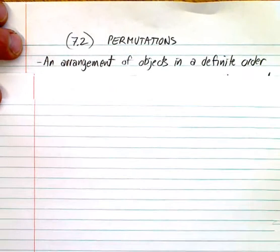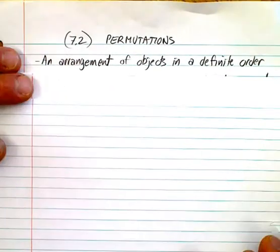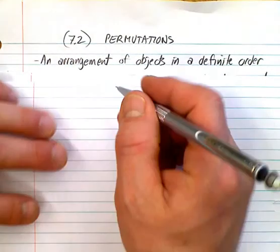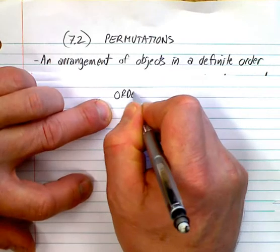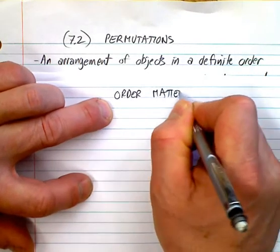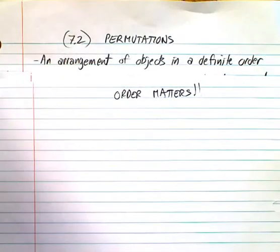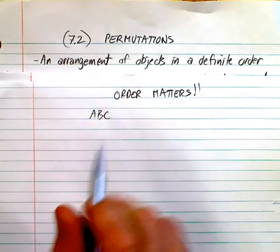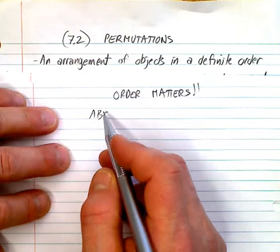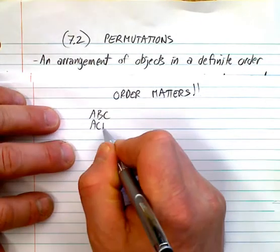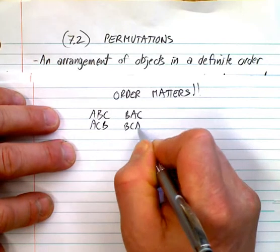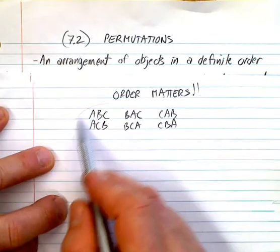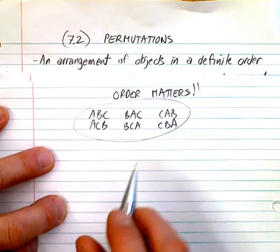Basically, a permutation is an arrangement of objects in a definite order. We often ask the question: does order matter? And right now, order matters for a permutation. That means if you're arranging ABC, there's only one group of ABC, but there are six permutations. Each of those permutations uses the same letters but in a different order. So order matters — these are all the same three letters, but they are six different permutations.